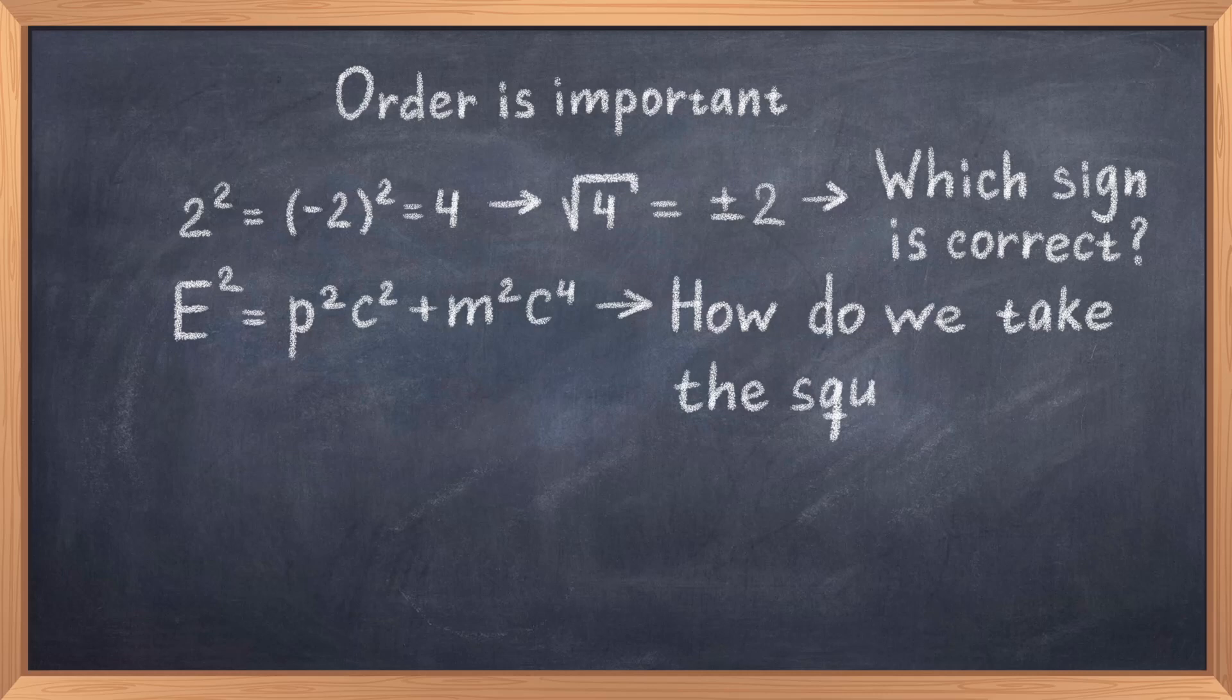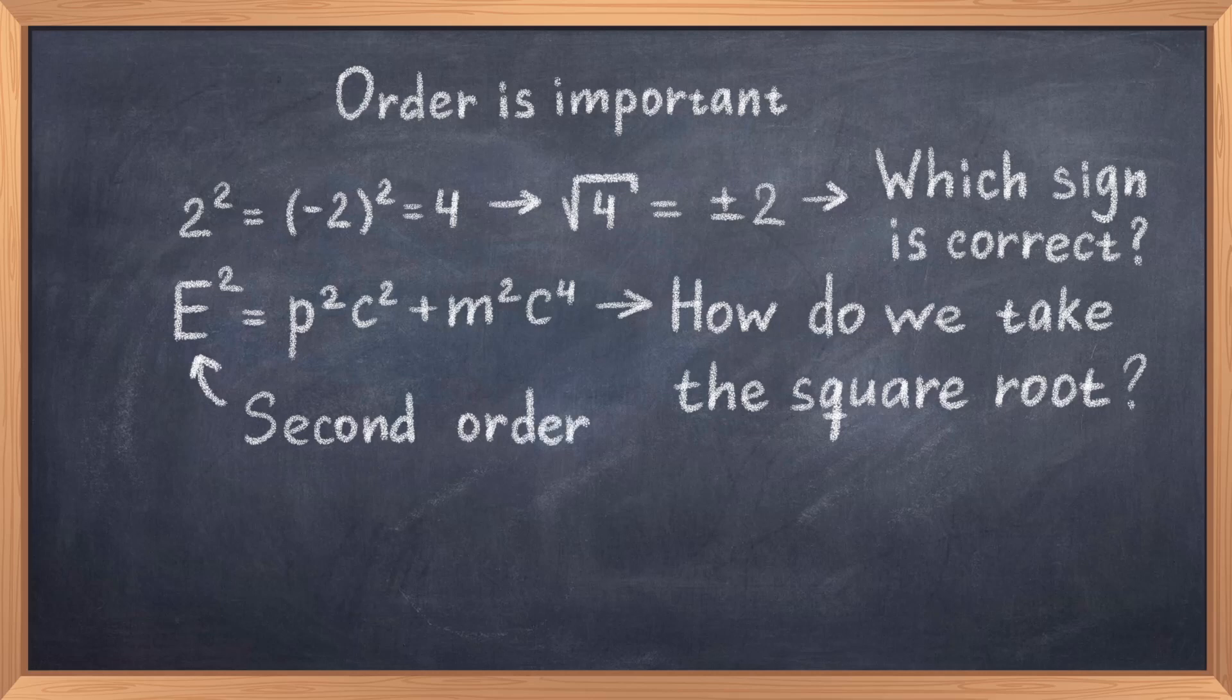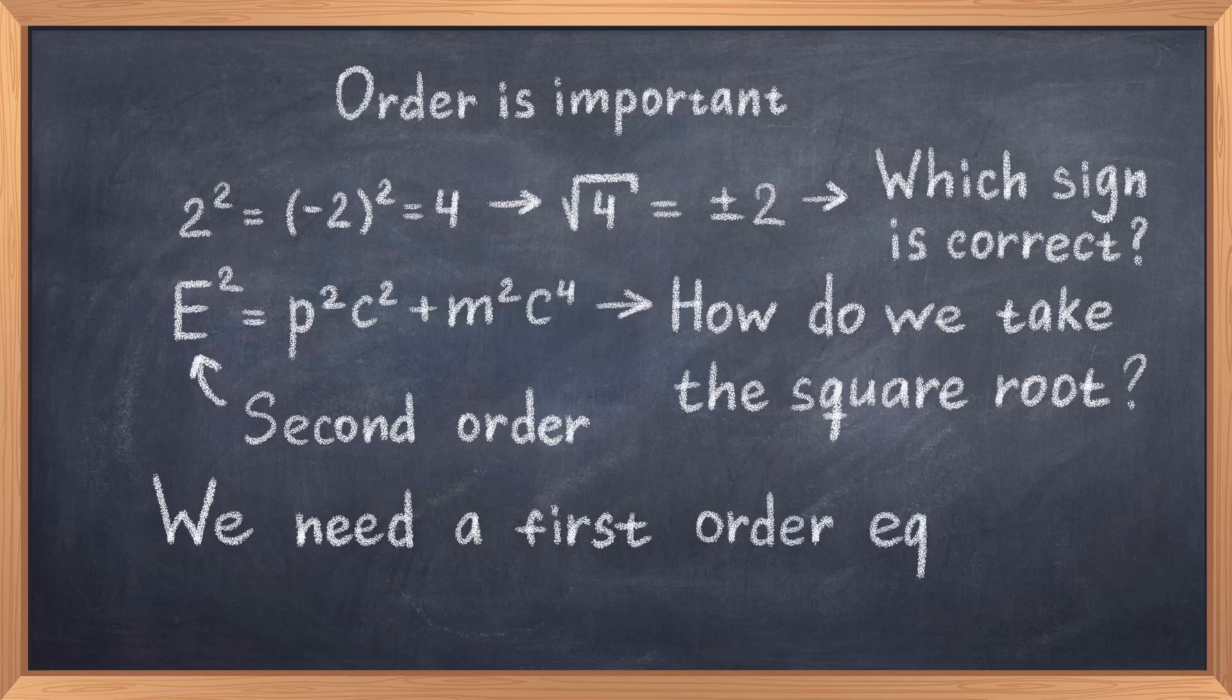The second order result is however rather natural, because in special relativity the definition of energy itself is second order. E squared is equal to p squared c squared plus m squared c to the fourth. The solution seems to be simple. We just need to take the square root and then everything should be fine. It however turns out that things are not so simple in the case of taking the square root of the Klein-Gordon equation. That is because the first order equation that we are looking for is actually a complex equation with imaginary numbers, unlike the Klein-Gordon equation where we only have real components.